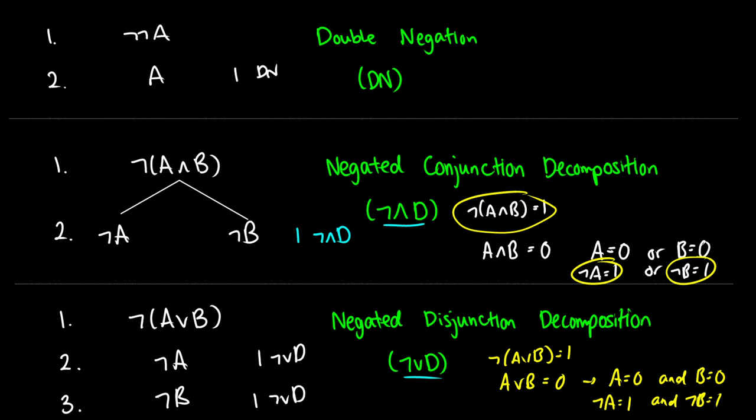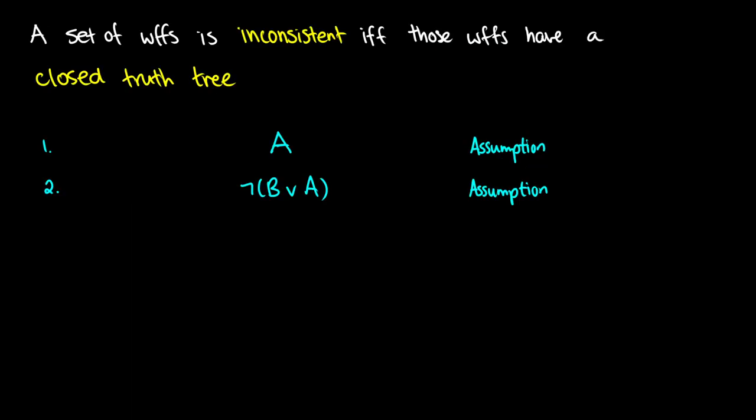So those are the five rules we're using today to try some truth trees. It's good to have them written on a reference sheet when you first start, but as you do more practice you'll internalize them. Now, what does 'inconsistent' mean? A set of well-formed formulas is called inconsistent if those formulas have a closed truth tree — meaning we get a contradiction no matter which path we take, so both things cannot be true at the exact same time.